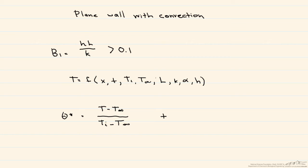We then define a dimensionless time, which is equal to our thermal diffusivity times our time divided by L squared, and this is also known as the Fourier number.